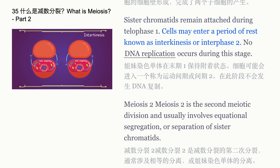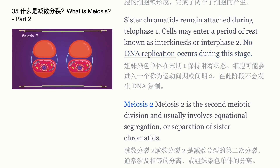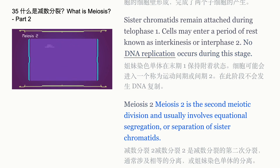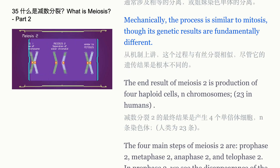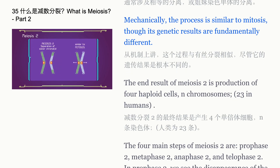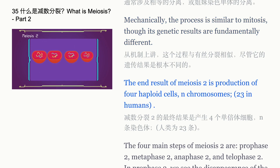Cells may enter a period of rest known as interkinesis, or interphase II. No DNA replication occurs during this stage. Meiosis II is the second meiotic division and usually involves equational segregation, or separation of sister chromatids. Mechanically, the process is similar to mitosis, though its genetic results are fundamentally different. The end result of meiosis II is the production of four haploid cells.